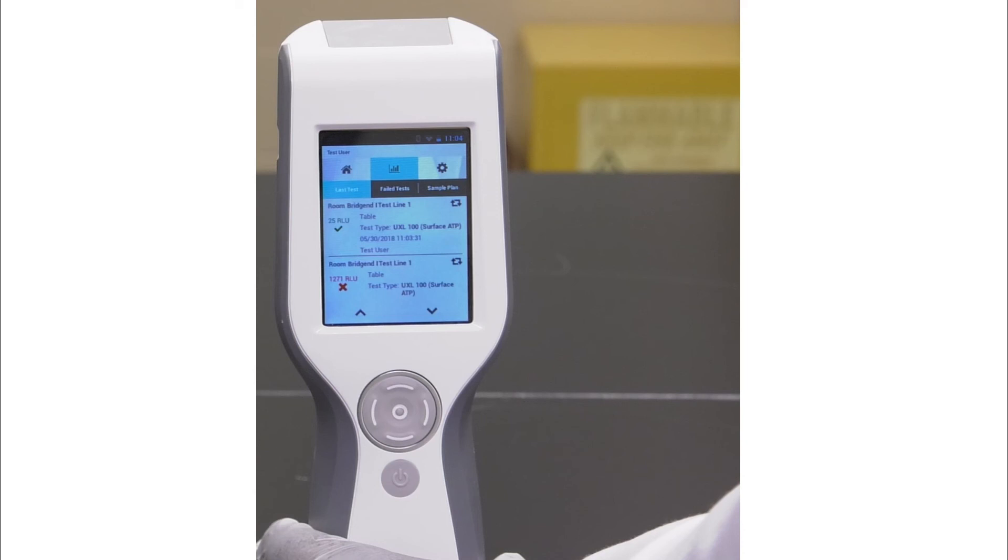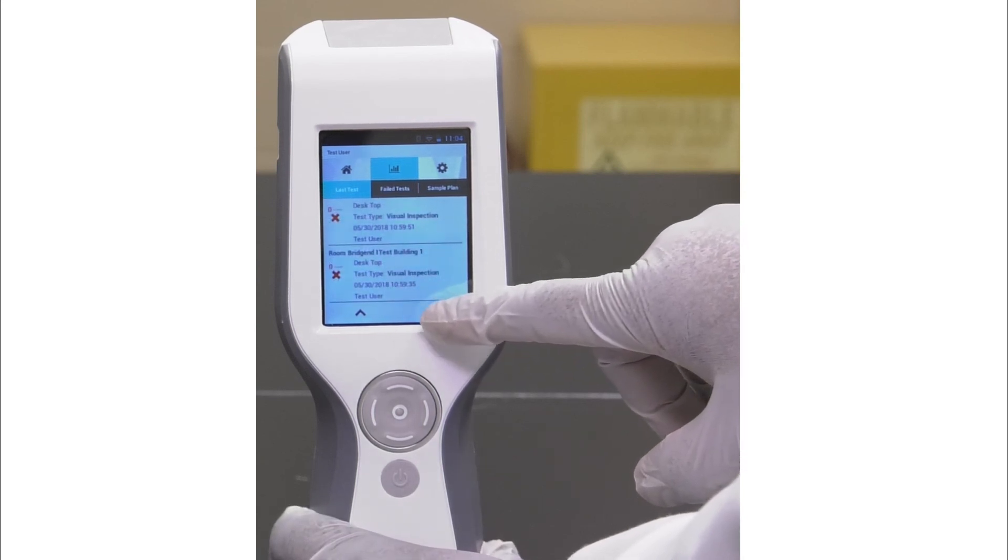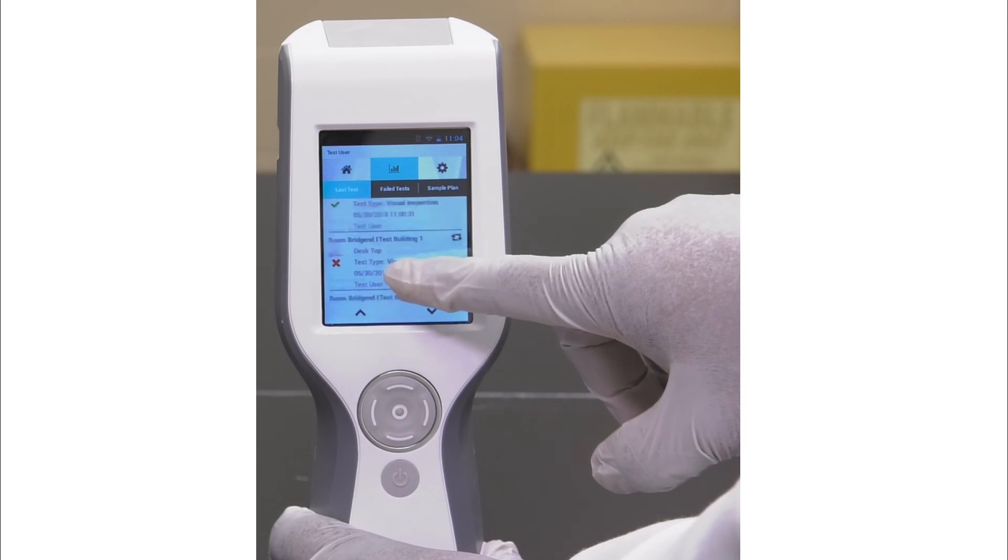To display results with a failed test status, tap Failed Tests. To display the most recent results, tap Last Test. To display results for the selected sample plan, tap Sample Plan. To display additional test results, tap the scroll down or scroll up arrows, or simply swipe up or down on the touch screen.